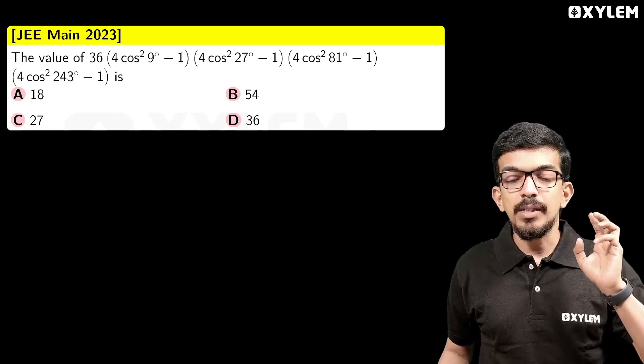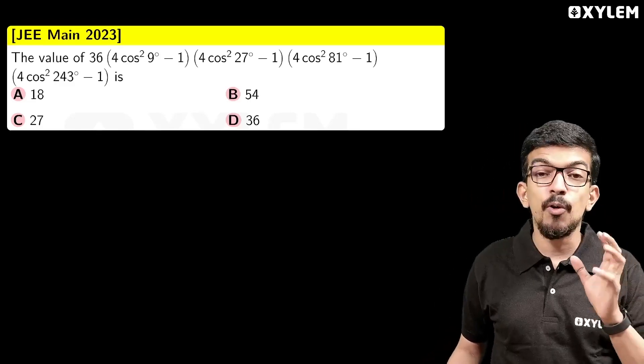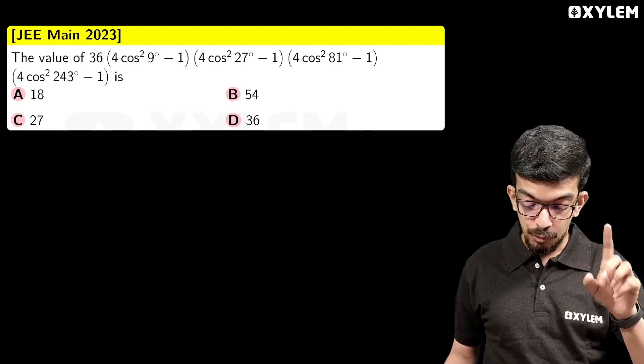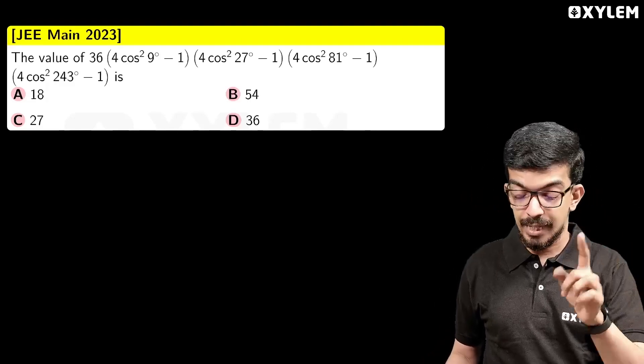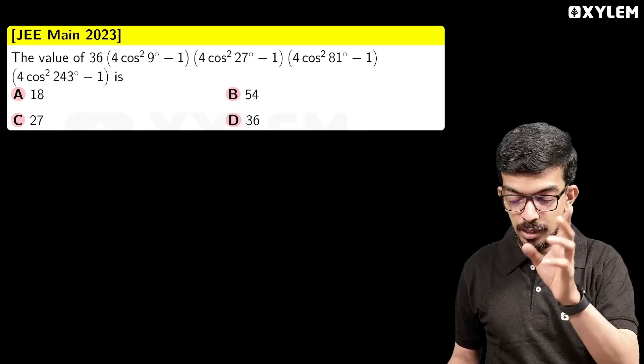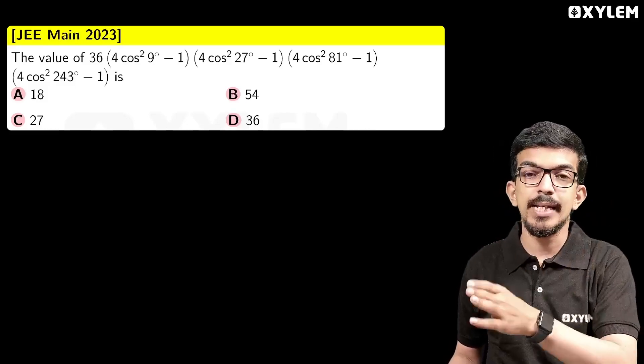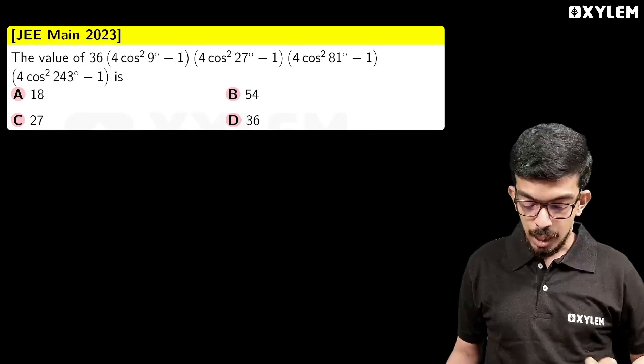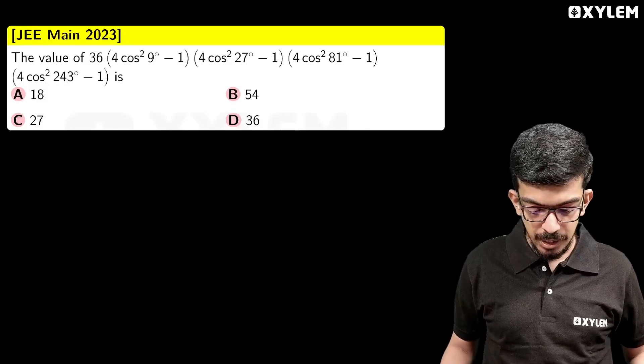The question is: find the value of 36 times (4cos²9° − 1) times (4cos²27° − 1) times (4cos²81° − 1) times (4cos²243° − 1).